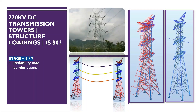Welcome viewers! In this video we are going to discuss about reliability load combinations for 220kV double circuit transmission line tower loadings, structural loadings as per IS802. This is stage 5 of 7. Before watching this video, we request you to watch our previous video which covers the first 4 stages.